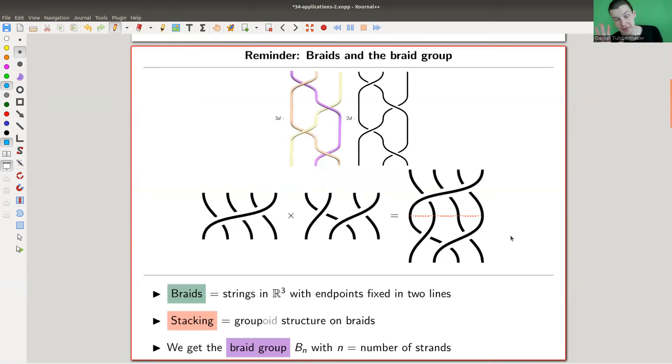So we get started very slowly. Hopefully, this picture is reasonably familiar by now. So braid is exactly what you see here. It's a three dimensional picture, which I usually draw as a two dimensional shadow, just strings in R3 with two fixed endpoints on some line. This would be a braid.